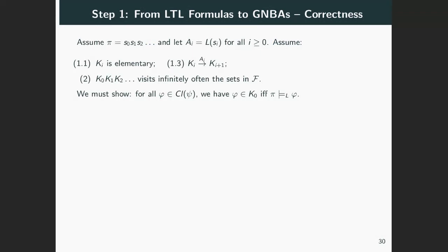We will now prove this more general statement. So we have a sequence π with Aᵢ denoting its atom-set labelings. And assume that each Kᵢ is elementary and consecutive Kᵢ's transit through the Aᵢ's in our automaton Aut_ψ. And also that the Kᵢ's visit infinitely often the accepting sets of our automaton. And we must show that for all formulas φ in the closure of ψ, being in K₀ is equivalent to being satisfied by our sequence π.